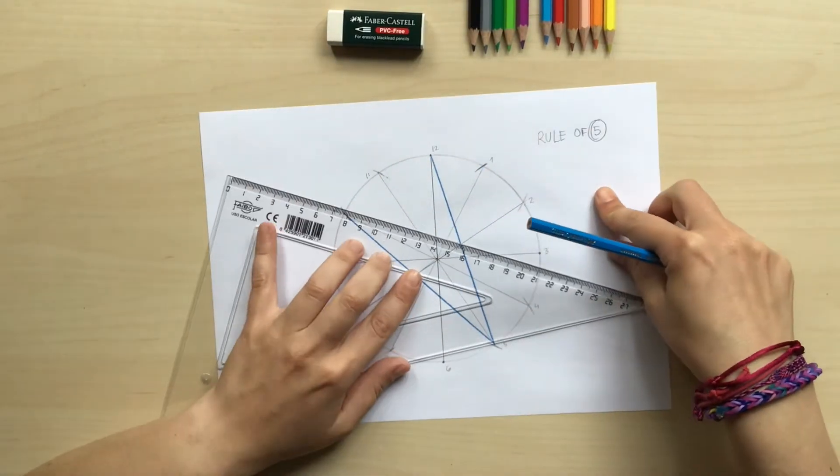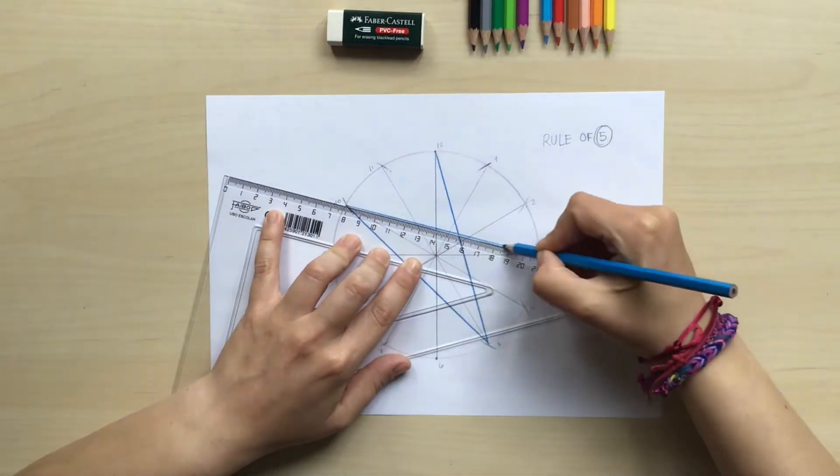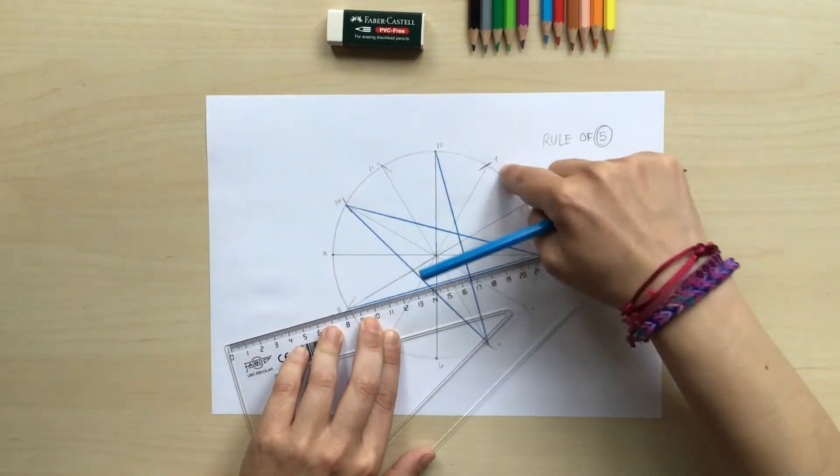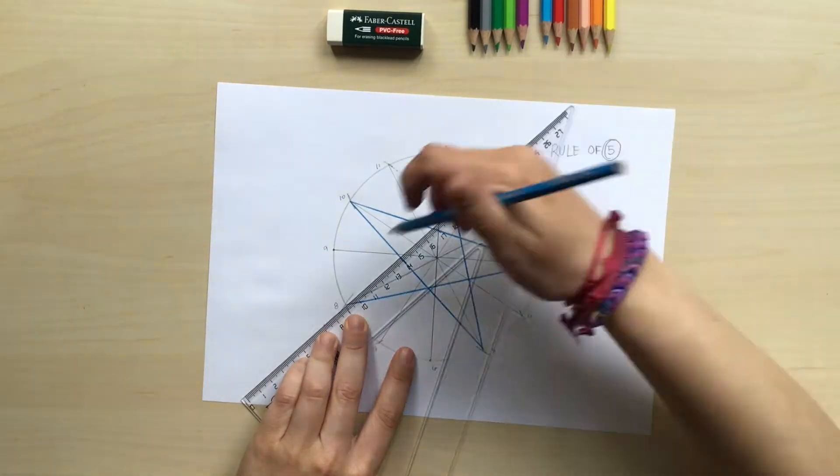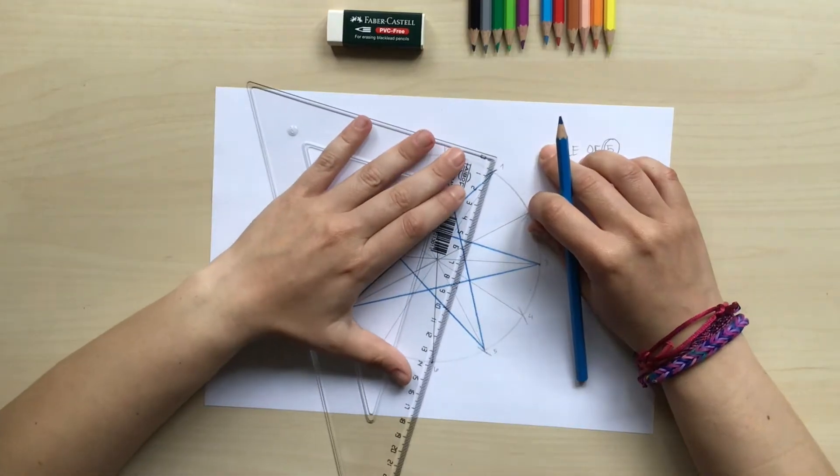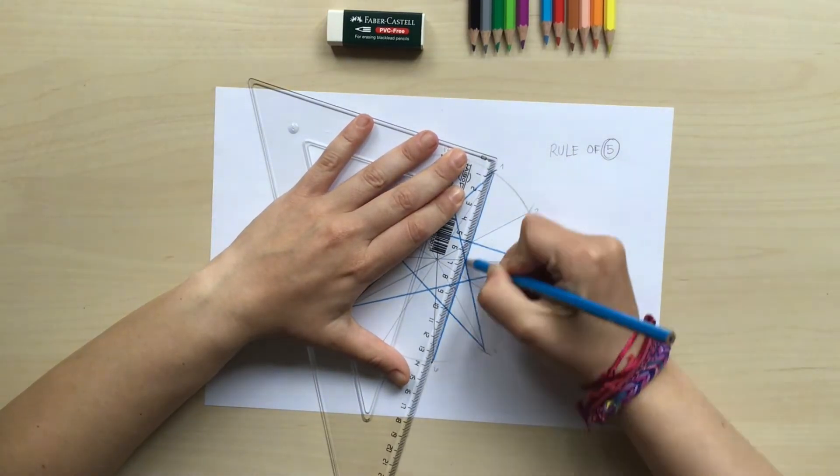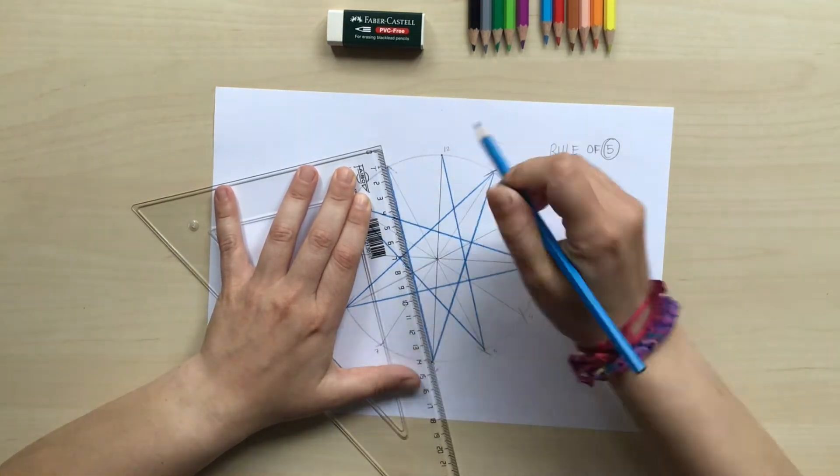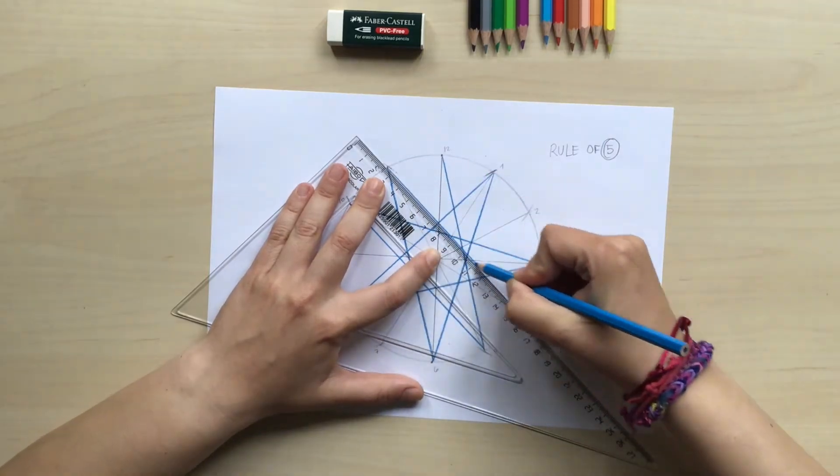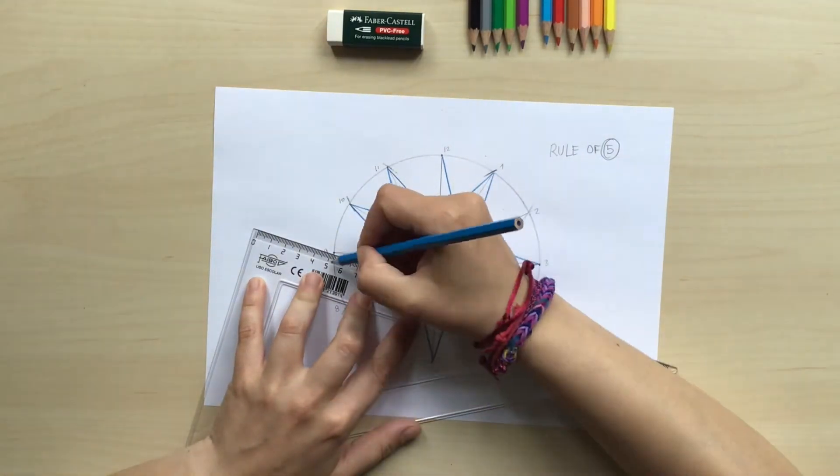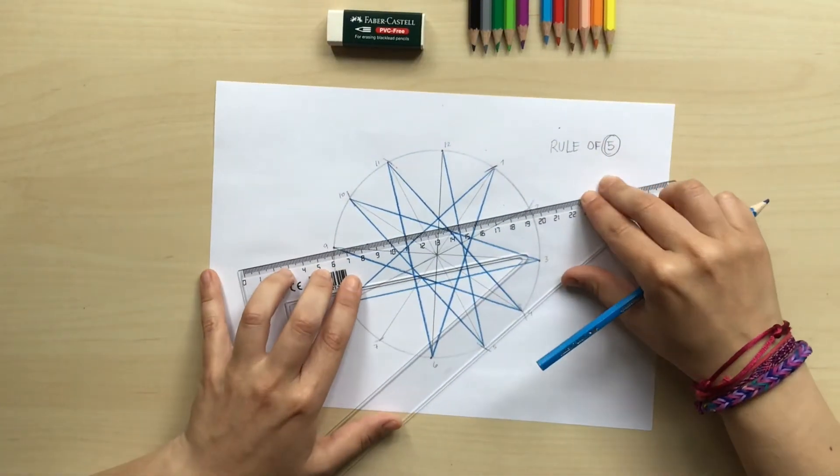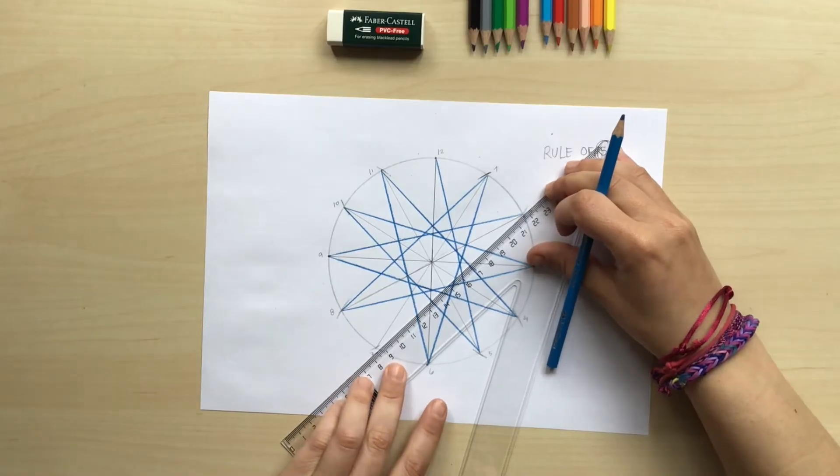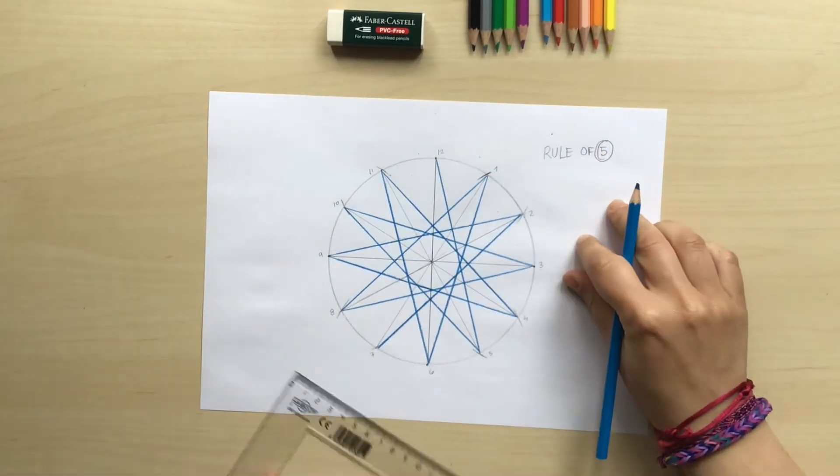From 10 to 3, and I'm gonna make another line from 3 to 8, and we're gonna do all those lines by adding always 5. So now from 8 I go to 1. From 1 to 6. From 6 to 11. From 11 to 4. From 4, 4 plus 5 is 9. 9 to 2. 2 plus 5 is 7. And from 7 to 12.